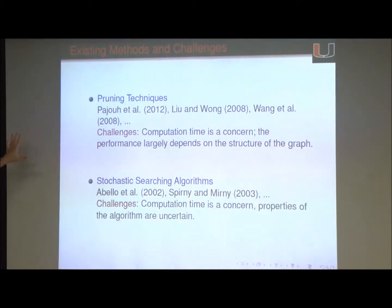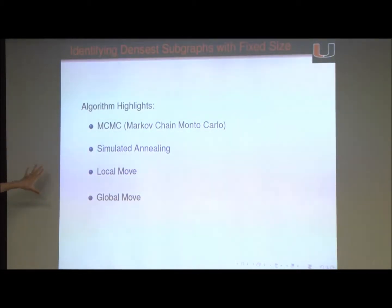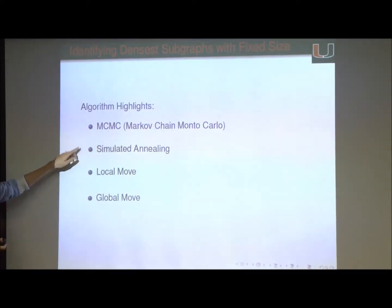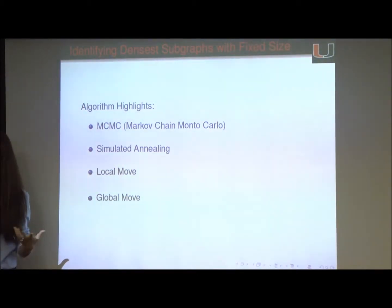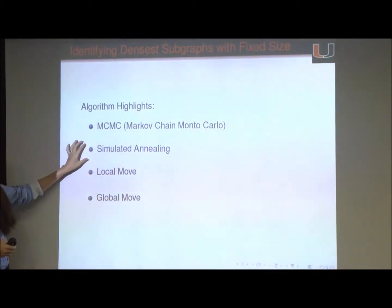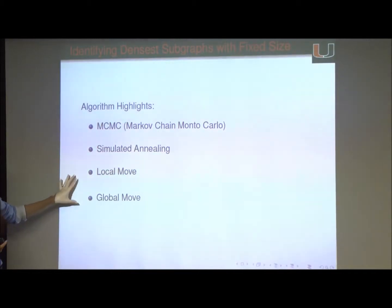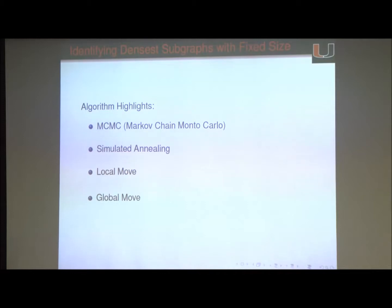Before getting into the details of an algorithm, I'd like to give a quick highlight of what we do in this work. To tackle this problem, we use a Markov Chain Monte Carlo algorithm that incorporates the idea of simulated annealing. In the proposal distribution for the Markov chain, we incorporate two types of moves: one is a local move and one is a global move, aimed at increasing efficiency of the Markov chain so we can move within the state space more freely.